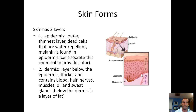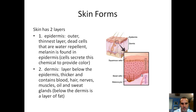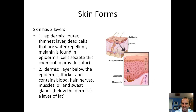Your dermis is the layer below the epidermis. It's thicker and contains blood vessels, hair, nerves, oil, and sweat glands. Below the dermis layer is a layer of fat. You can see the epidermis, the dermis layer, and then the fat cells below that in the diagram.